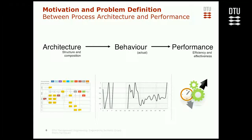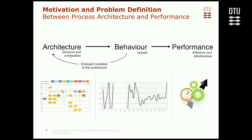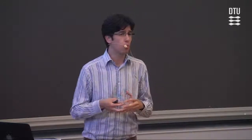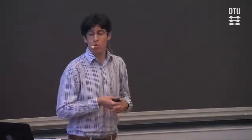Once we have the architecture decided, people start implementing the process. By doing that, we can observe behaviors, interactions, and information flows. These interactions determine, at least in part, the performance we observe in terms of efficiency and effectiveness of the process as a whole, but also of individual activities. Architecture is very important because, following this logic, architecture determines performance. Of course, it's not all that simple — when people do things and behavior arises, architecture continues to evolve. And when performance is not what we wanted, we might want to revise and redesign the original architecture.